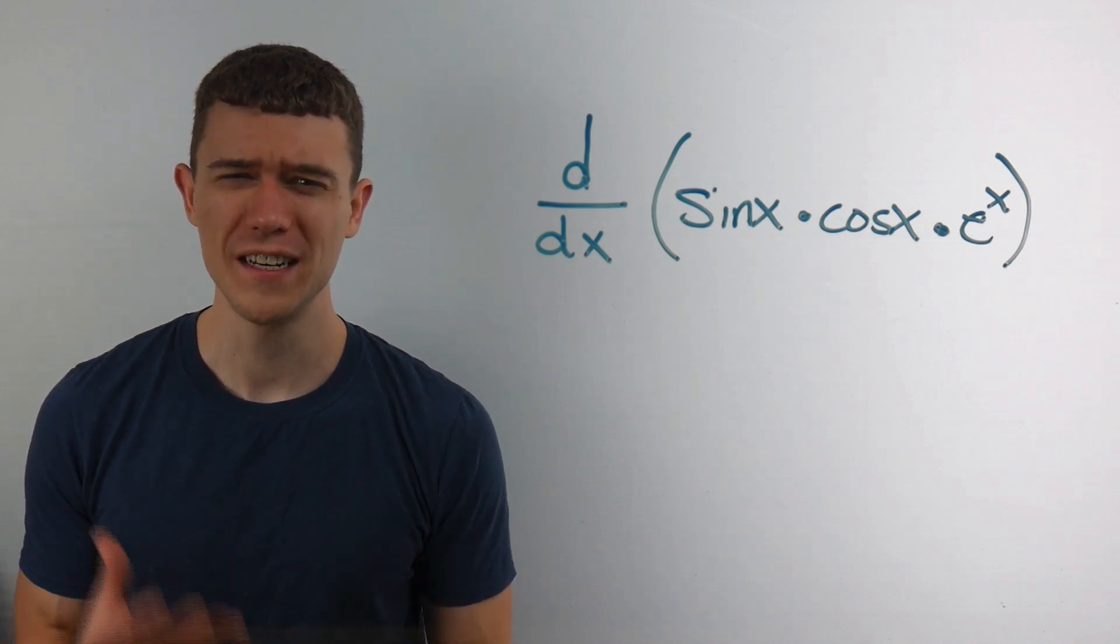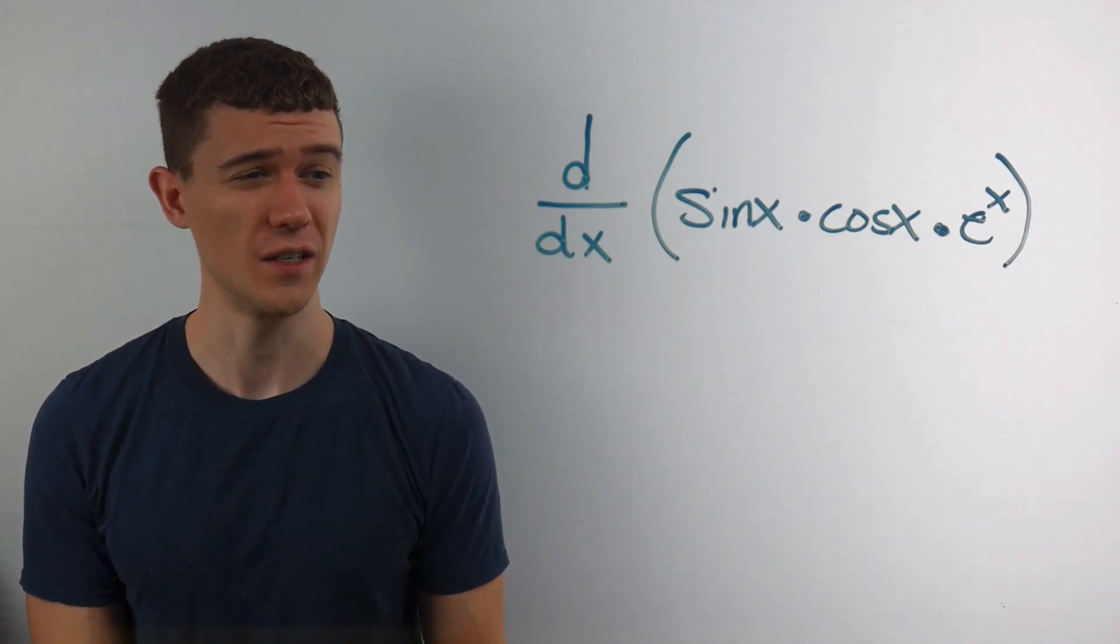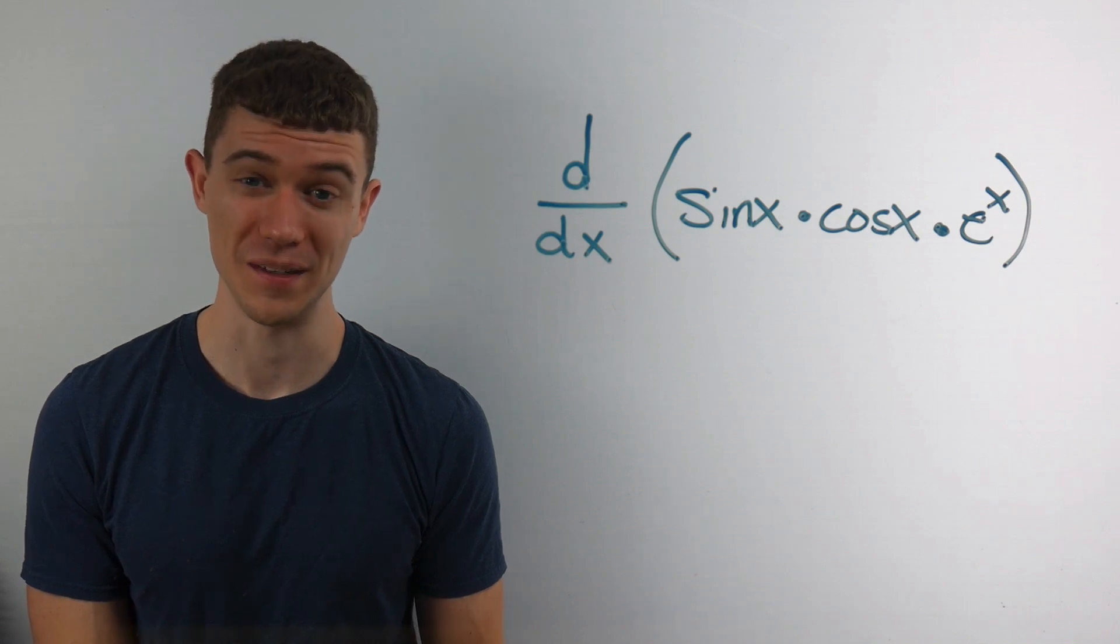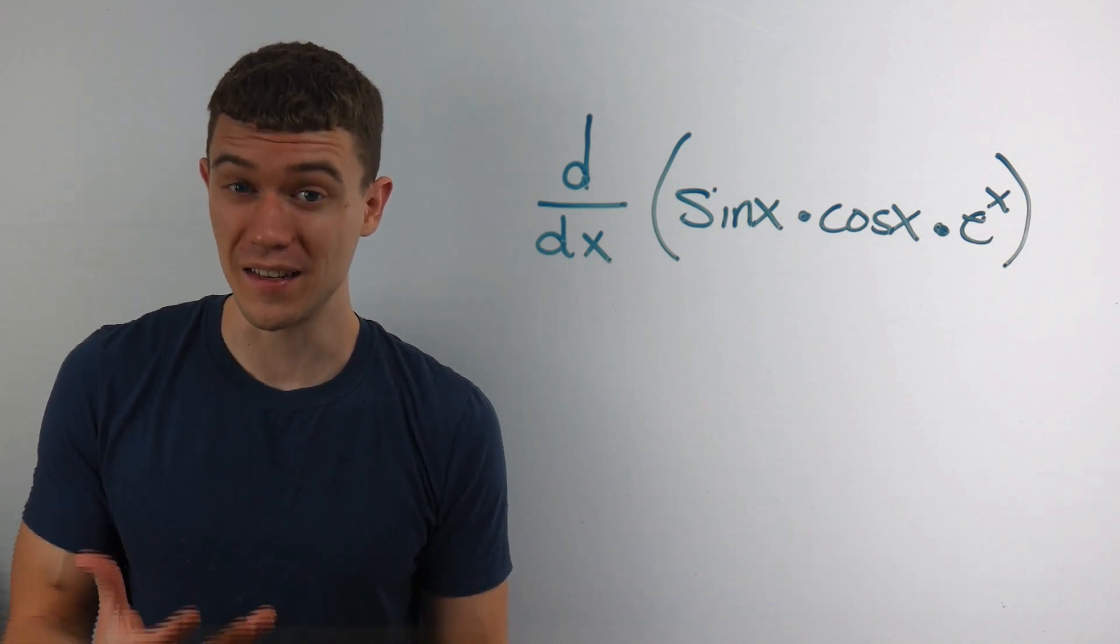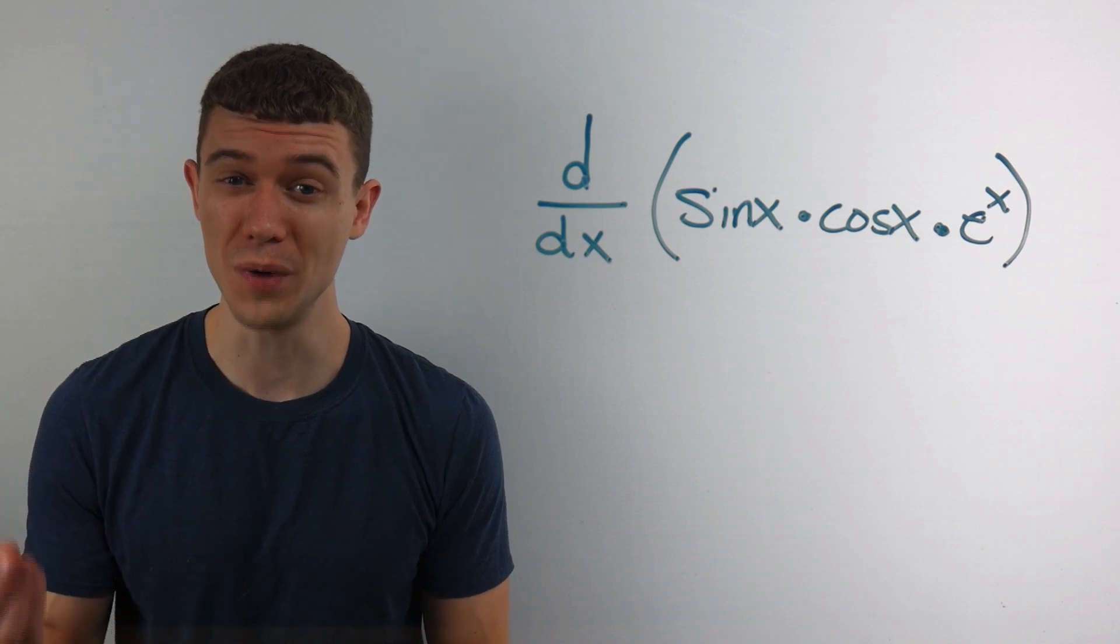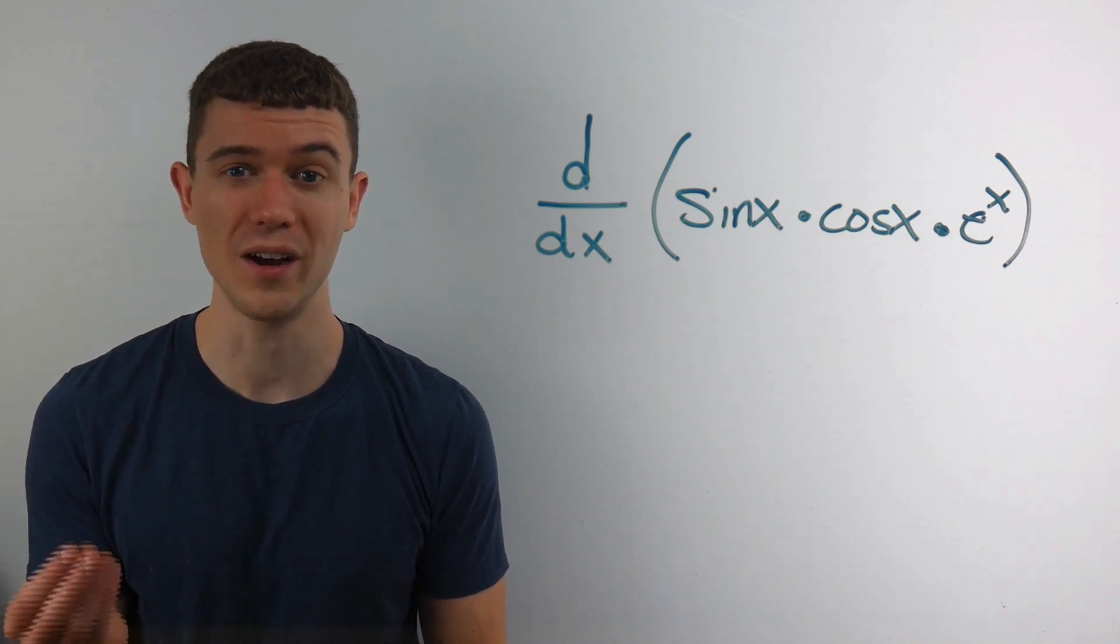Hey, it's Brian. In this video, we're going to take the derivative of this function, sine times cosine times e to the x. It's a product, it's a triple product. So the regular product rule won't quite cut it here.